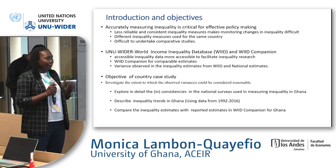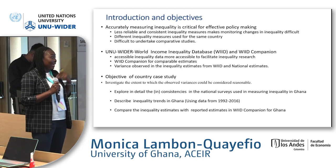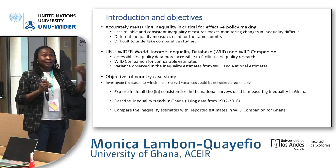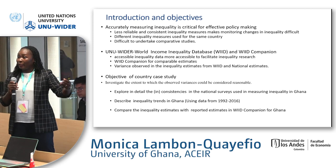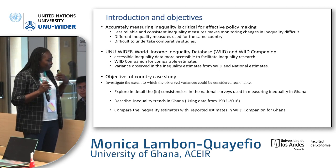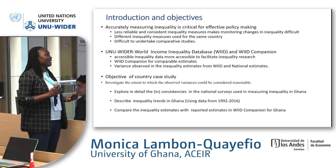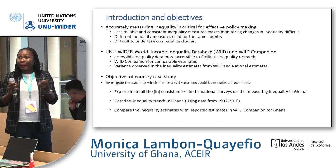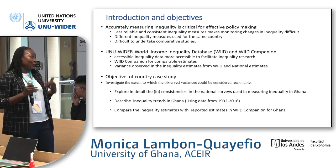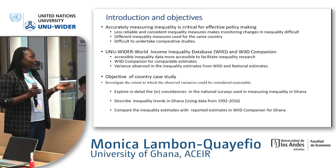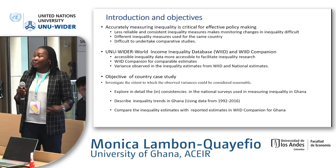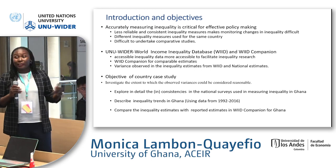What we observe from the WID Companion is, at least for the case of Ghana, that we do find some disparities in terms of the measure of income inequality estimated by the UNU-WIDER team and what we also do at ACER. Basically, for this particular paper, what we try to do is investigate the extent to which those observed disparities could be considered reasonable. In the paper, we explore in detail the inconsistencies, particularly with the national surveys used in terms of how inequality is measured.